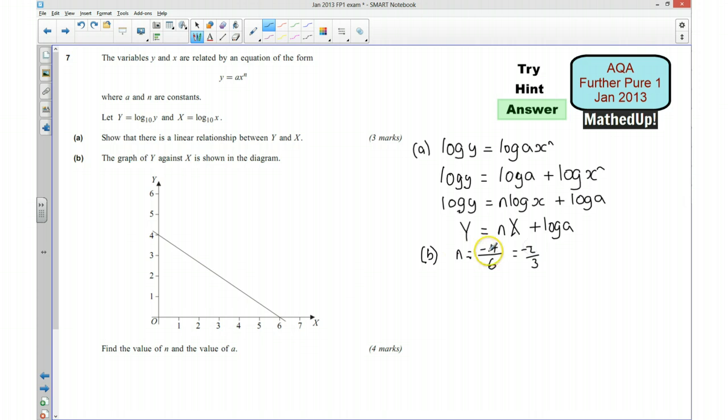So that's the gradient of the graph, it's negative 2 thirds. And also, so N is going to be equal to negative 2 thirds. Also to find A, well I know that log A is going to be my C in this Y equals MX plus C, and that's going to be my Y intercept, which is 4. So I can say log₁₀A is equal to 4.